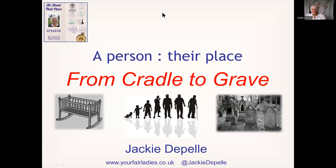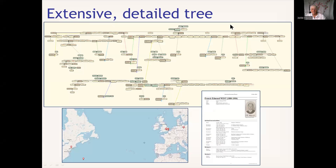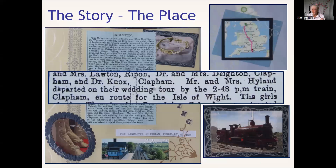Welcome to 'All About That Place.' What I'd like to do is look at a person and what it tells you about their place. We can create extensive, detailed trees putting all the people in our families, but when we need to look at where their places are - looking at a map - we start to wonder why they're there, what they did there, and what caused their movements. We can also do reports, and a newspaper article about a honeymoon tells us where they start, where they go, and we can trace the journey and their transport - all about connecting places.